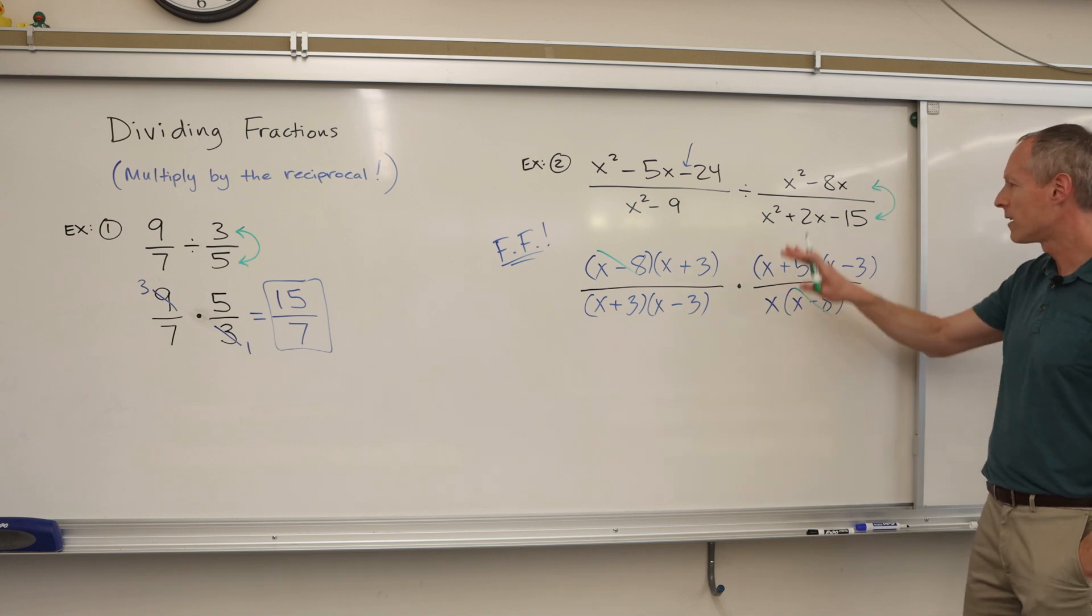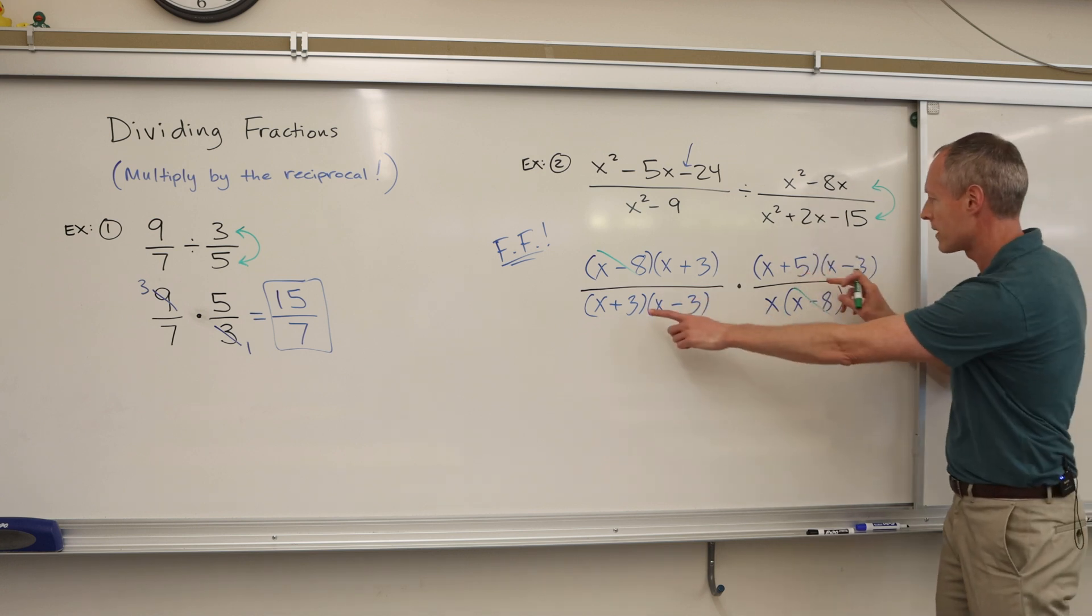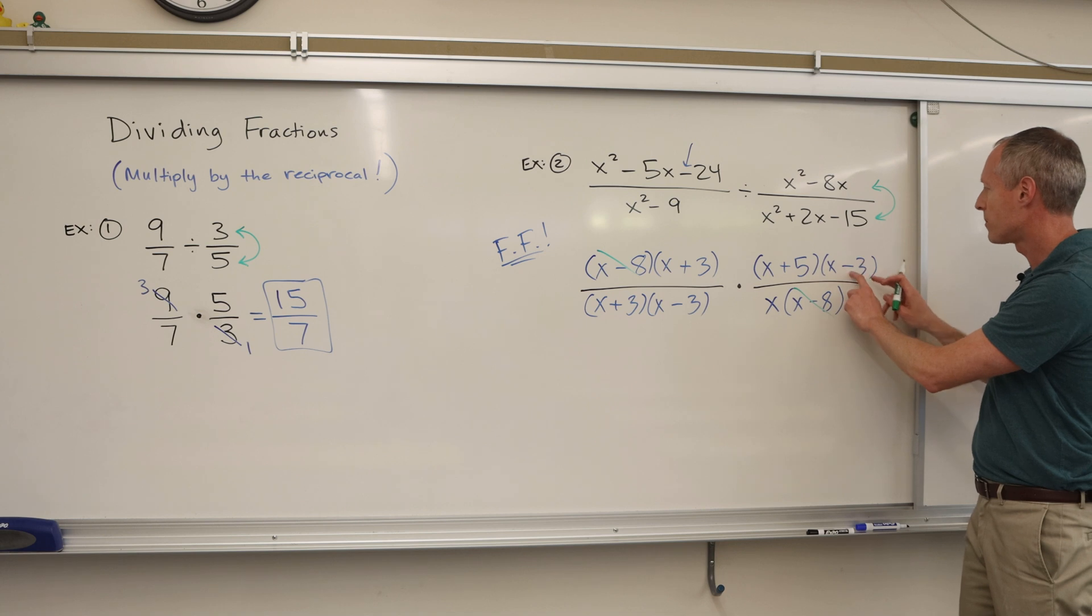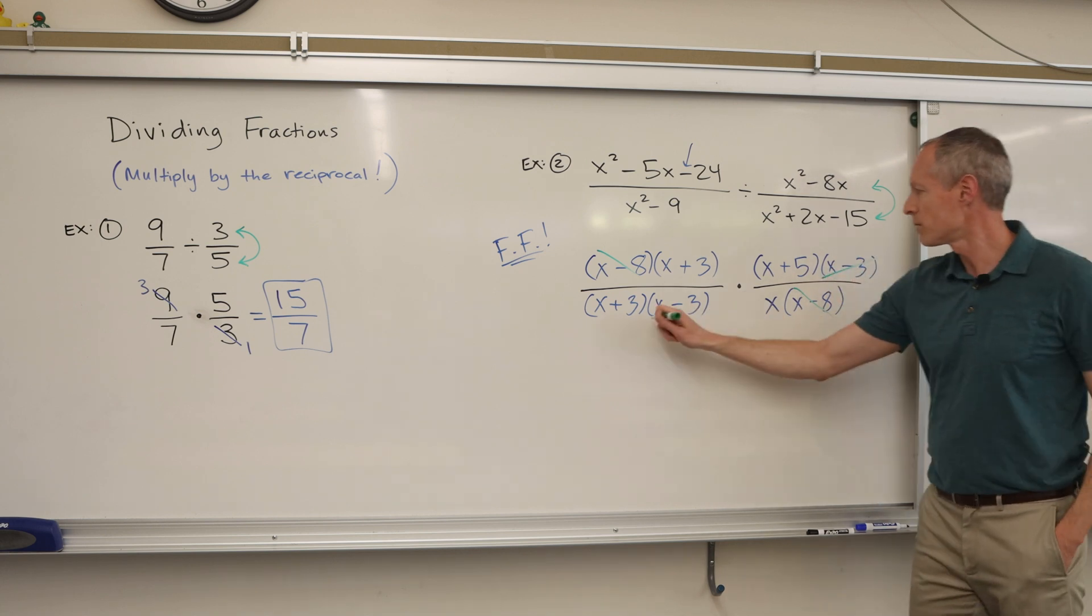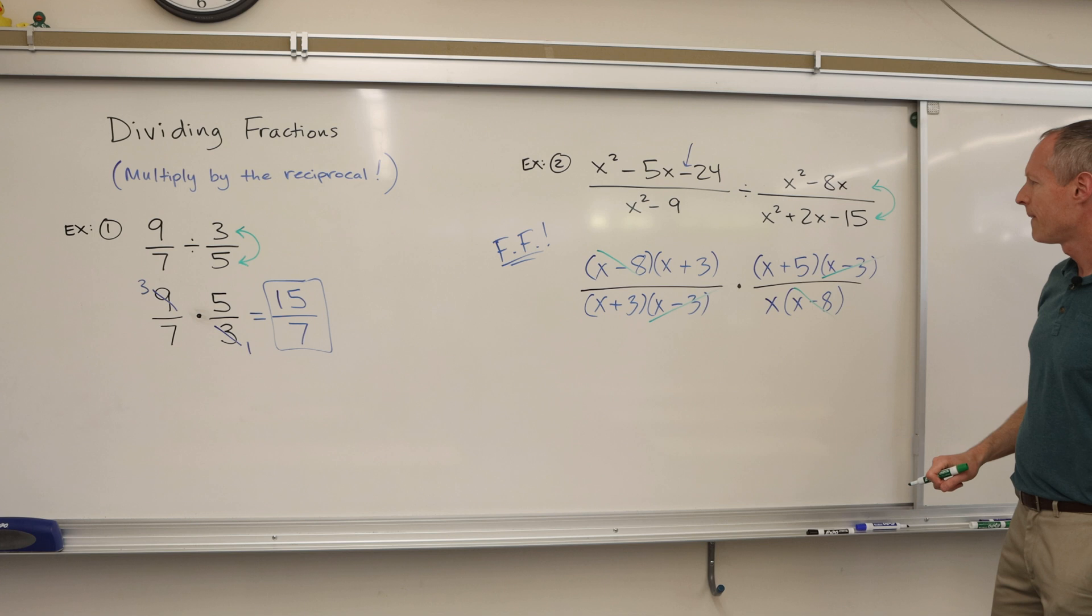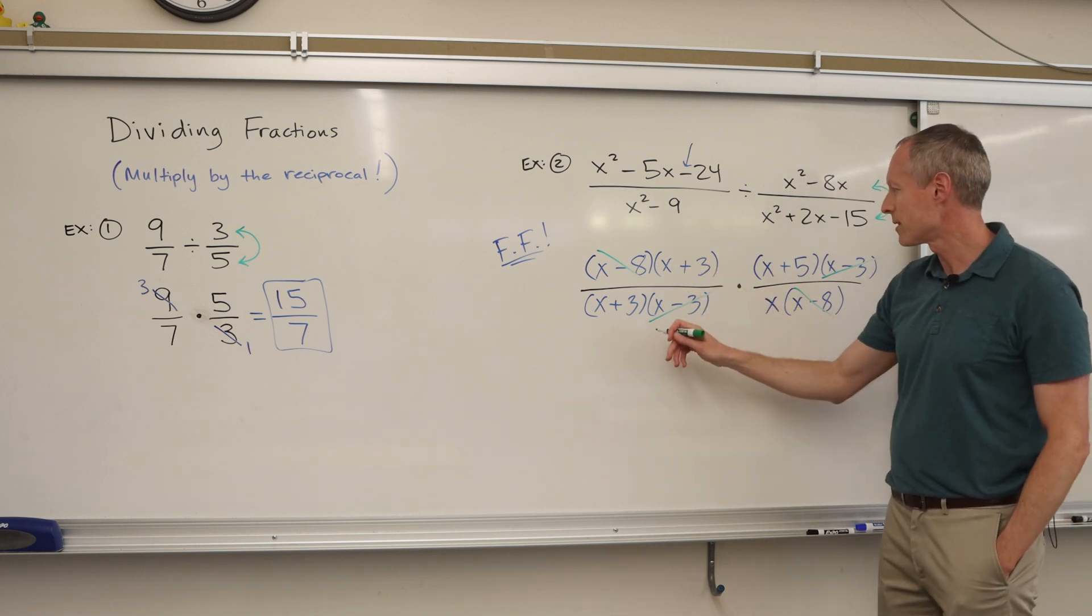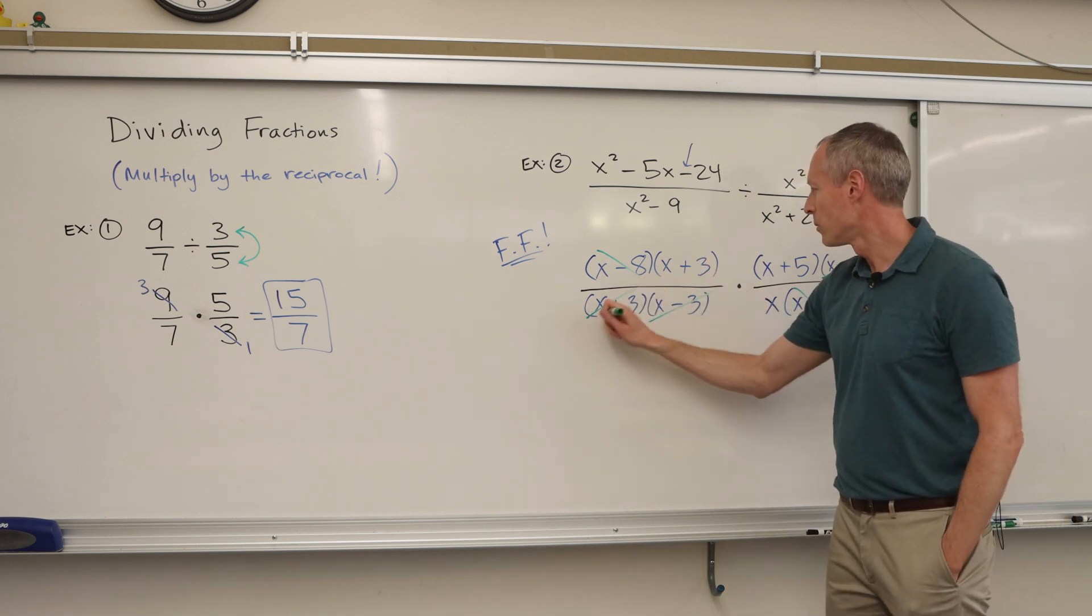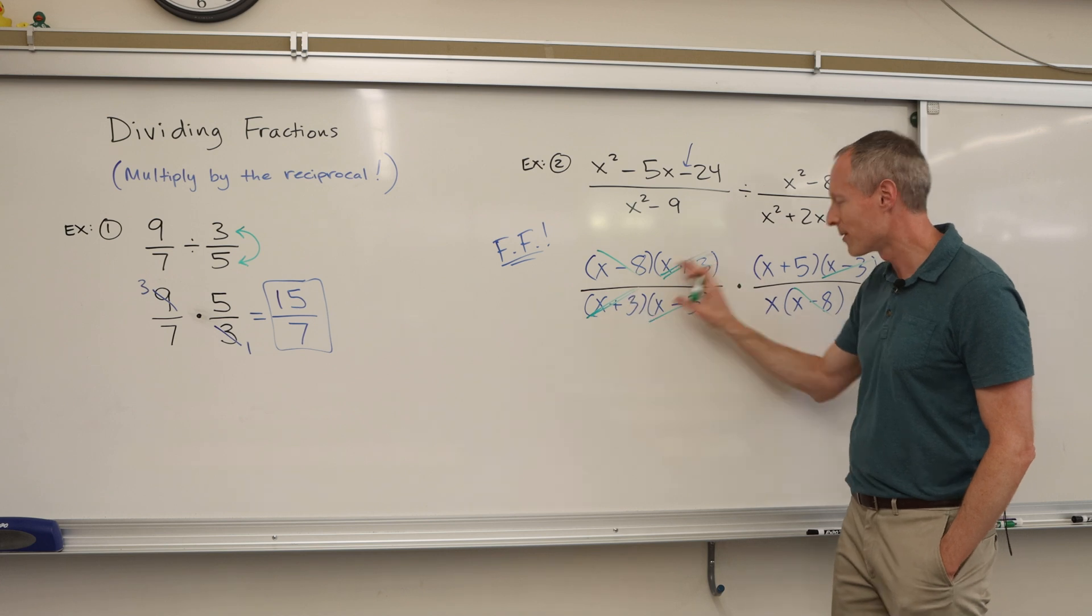x plus 5 on top. Do I have an x plus 5? Nope. x minus 3? Yes. So I can go whoosh, whoosh, cross out those. And then, I have x plus 3. Sometimes I'll do a double mark like whoosh, whoosh, whoosh, whoosh to match those up.